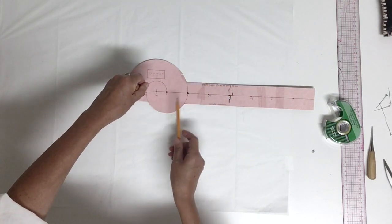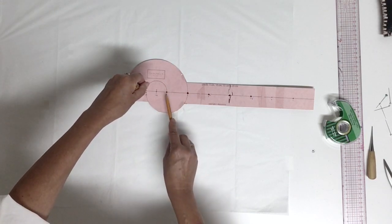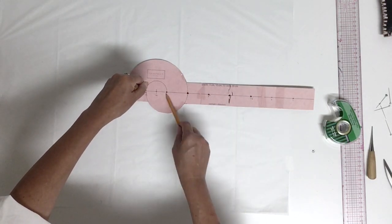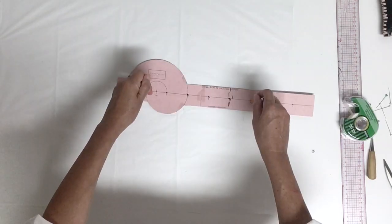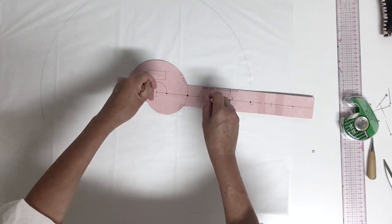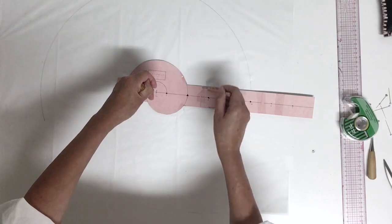If you want to start with number five and go back like that, it's okay too. Now we're tracing the top circle. Don't press too much because silk paper is very delicate.